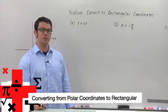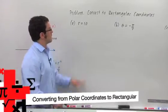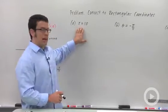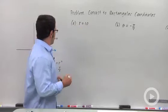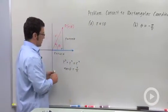We're converting polar equations to rectangular. Let's start with some simple examples. r equals 10. Now let's remember that we have these equations to work with.